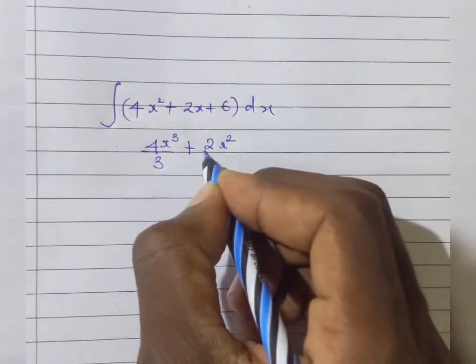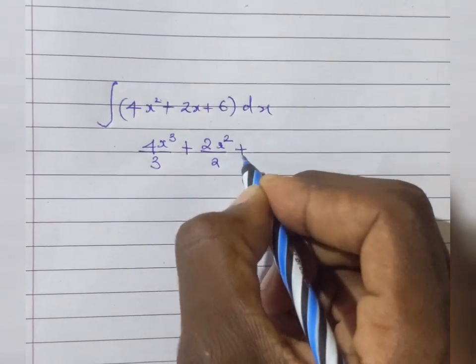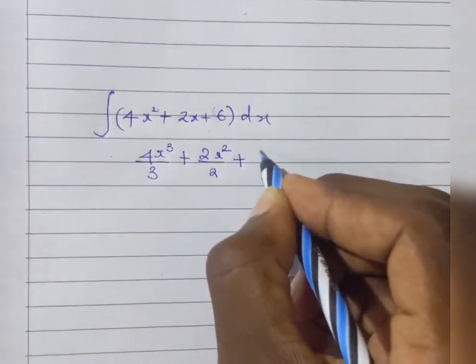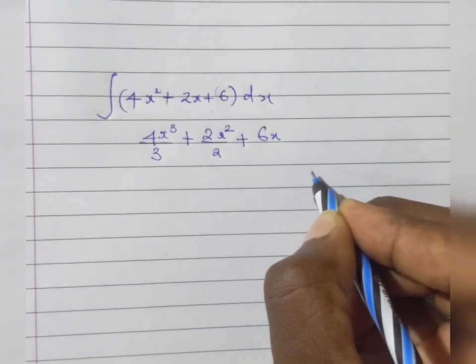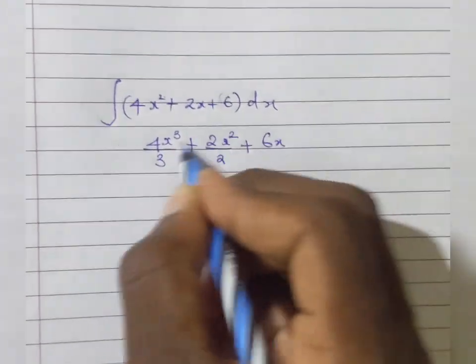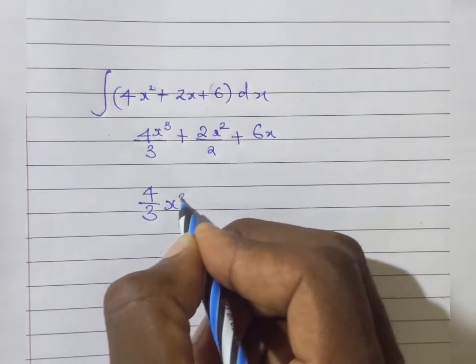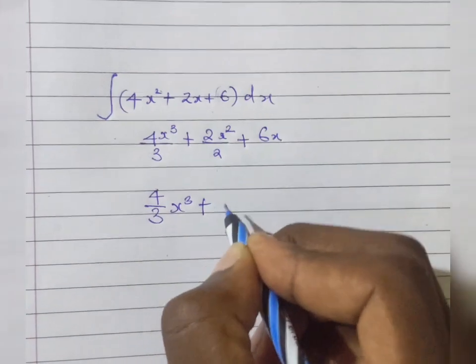So it will go to 2 over 2 plus a constant. When you are integrating, it gets an x. Let's see if there's anything that you can reduce from here. 4 over 3 will remain the same. x to the power 3 plus 2 can go into 2, that's 1.